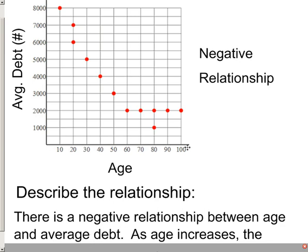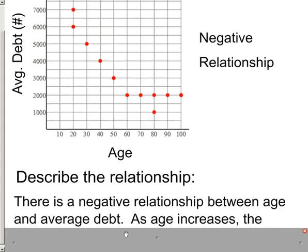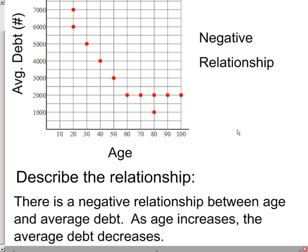As age increases, again, we start with this x-axis. As your x gets bigger and bigger and bigger, you'll notice that your y starts to decrease. So you'll say as age increases, the average debt decreases. That's how you would handle a negative relationship. Two sentences and you're done.